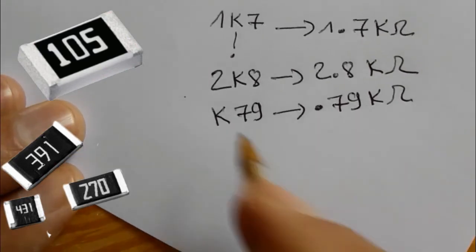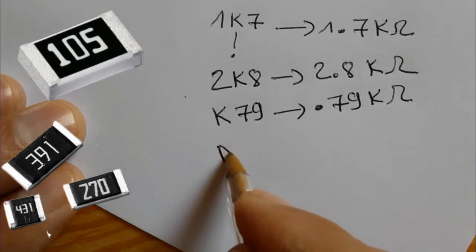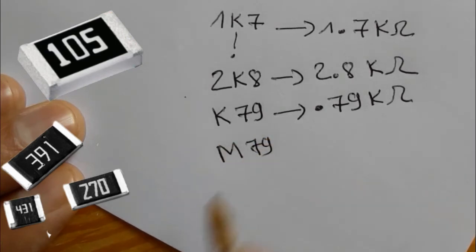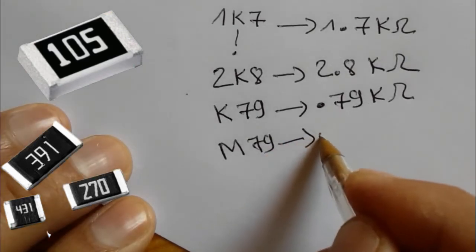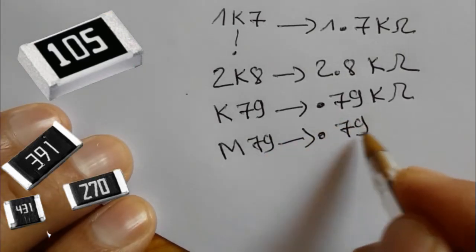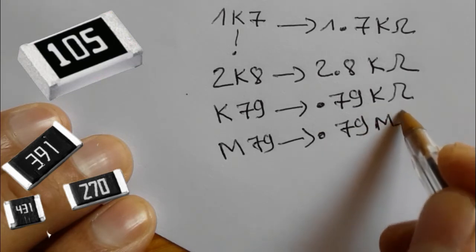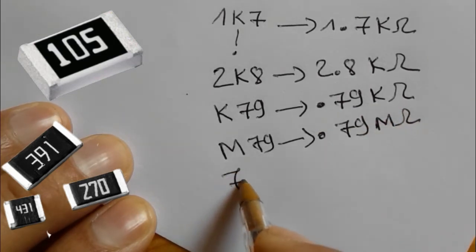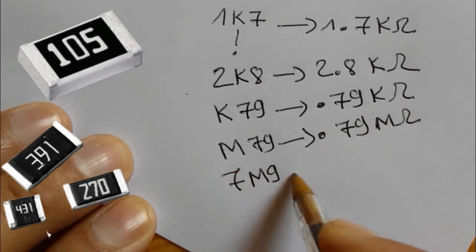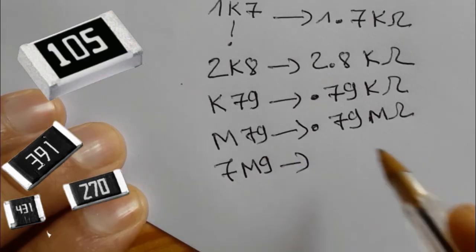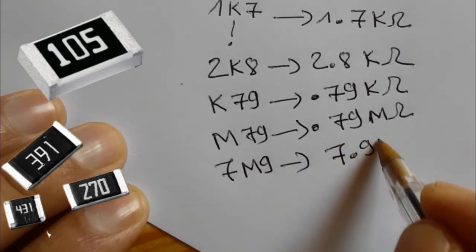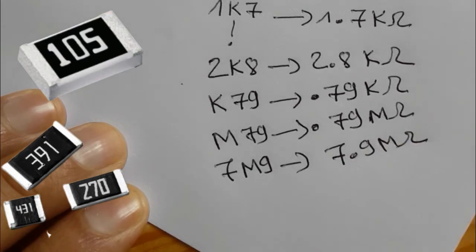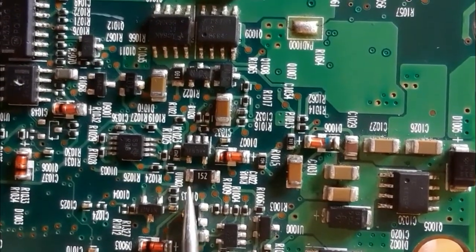The same applies for M, which stands for mega-ohms. M79 means 0.79 mega-ohms, and 7M9 means 7.9 mega-ohms.